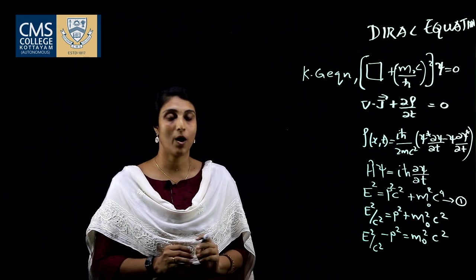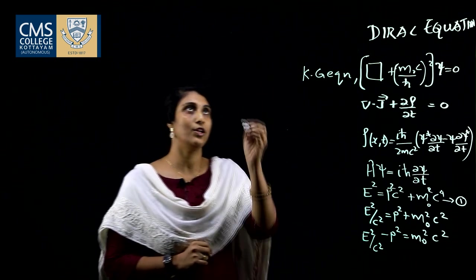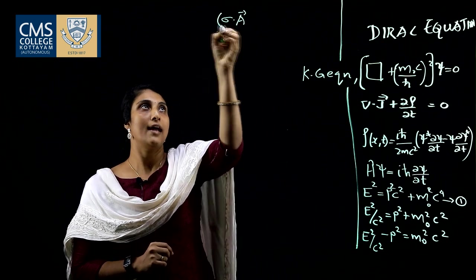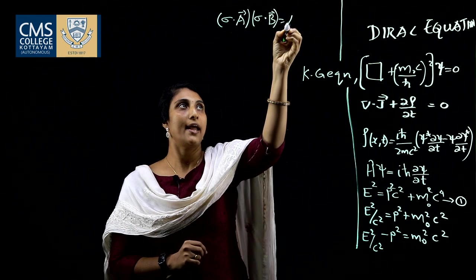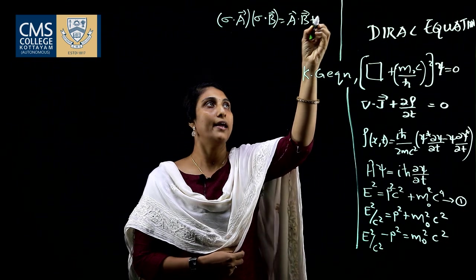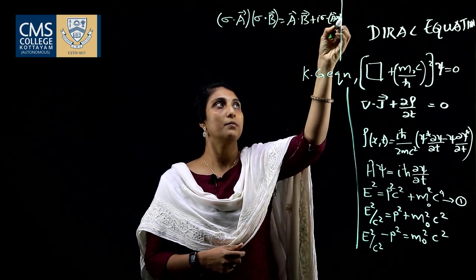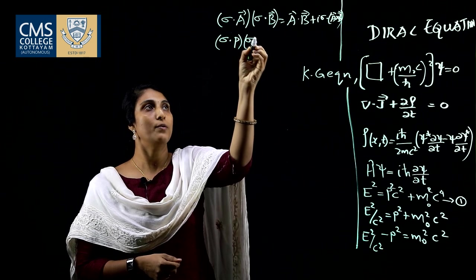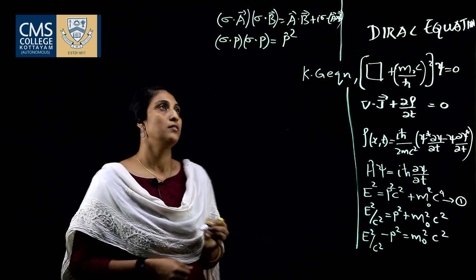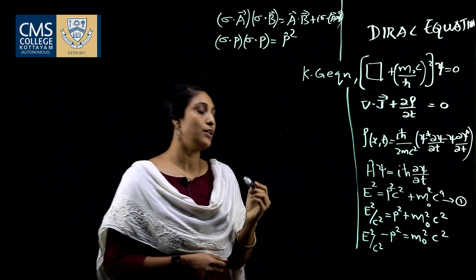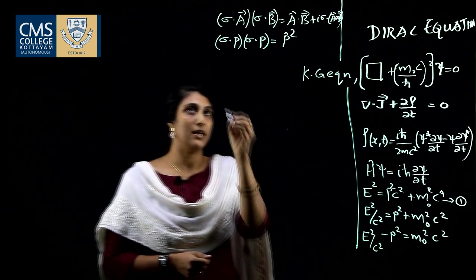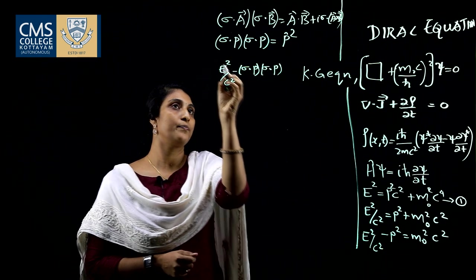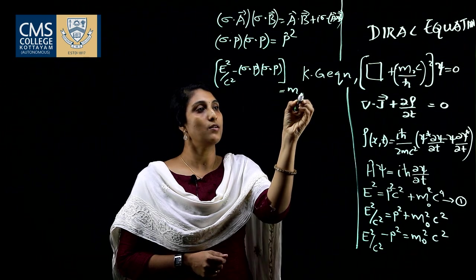For that, we use the Pauli spin matrices σ, where σ·a × σ·b = a·b + iσ·(a×b). For the momentum operator, σ·p × σ·p = p². In this way, if we substitute p² with (σ·p)(σ·p) in the equation, we can incorporate spin: E²/c² − (σ·p)(σ·p) = m₀²c².